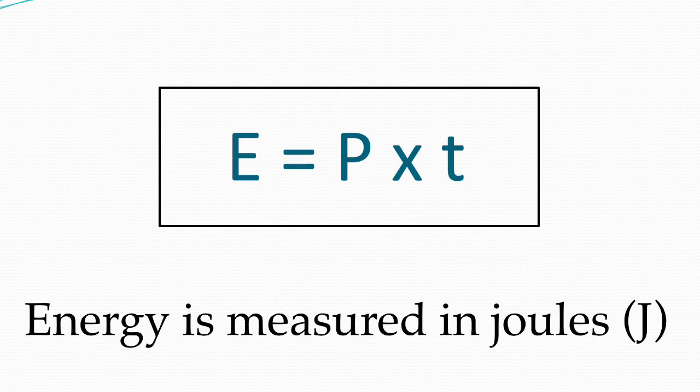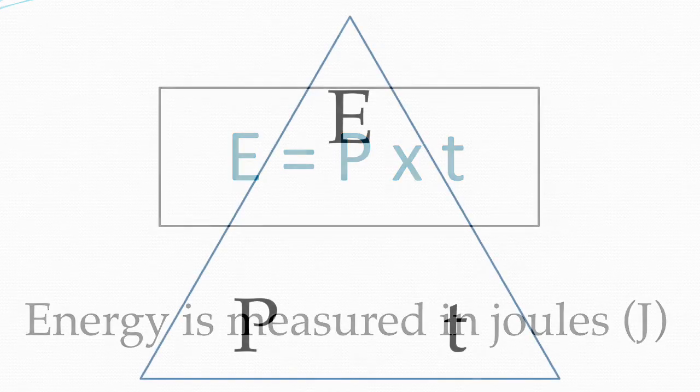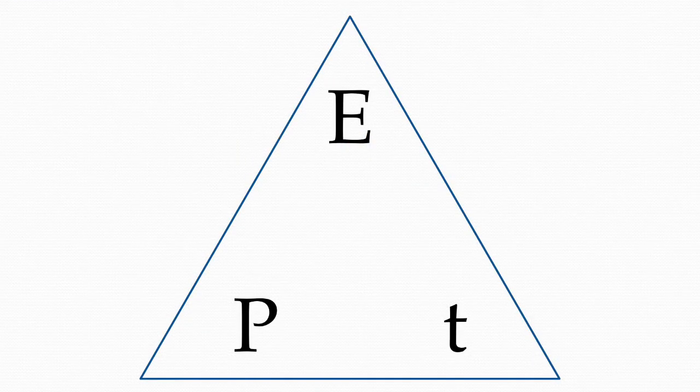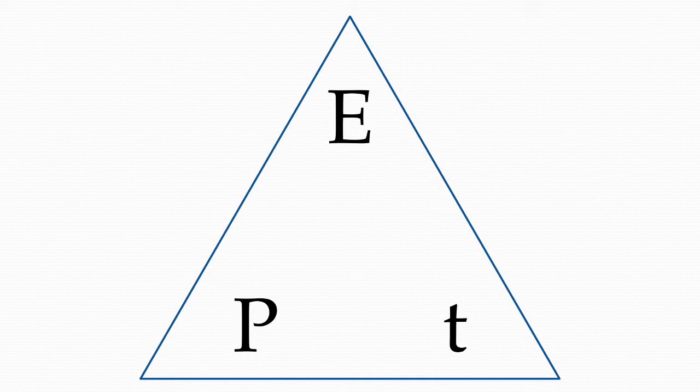Energy can be found by timesing the power by the time. And to help us rearrange this equation, we can use this equation triangle, E-P-T.